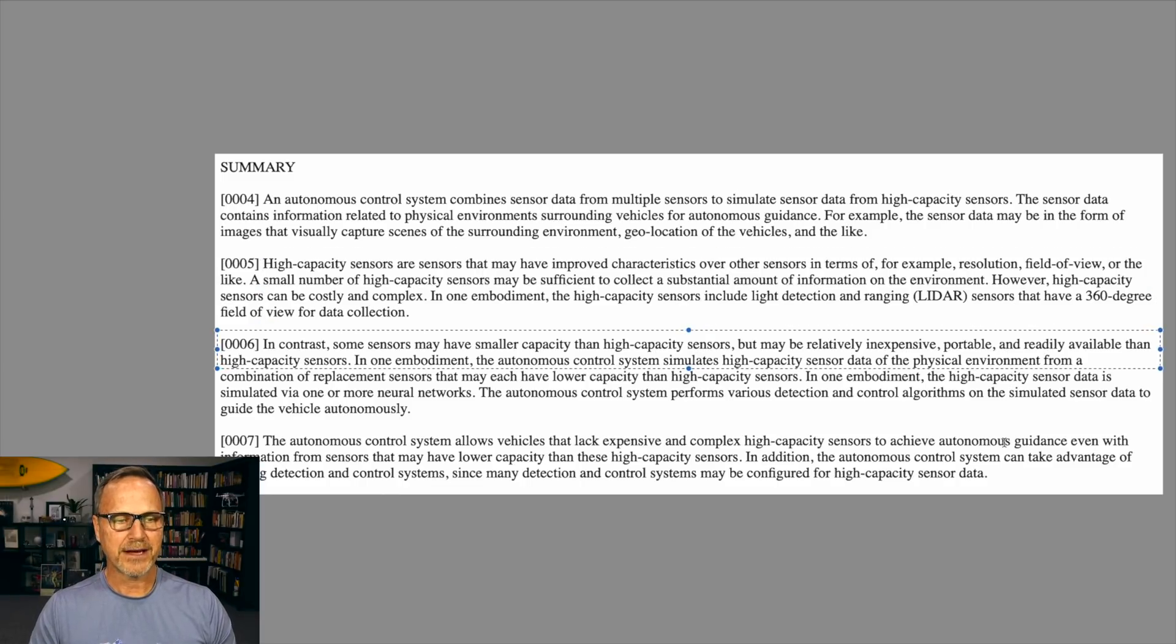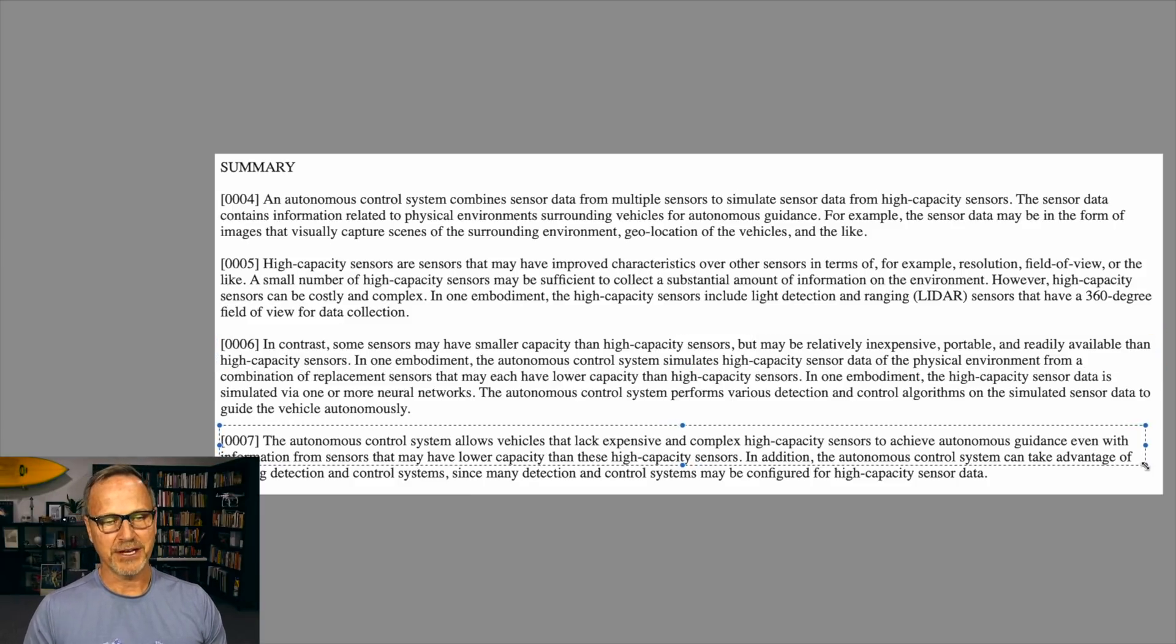Continuing on, in contrast, some sensors have smaller capacity than high-capacity sensors—that would be cameras, by the way—but may be relatively inexpensive, portable, and readily available than high-capacity sensors, which would be the LiDAR systems. In one embodiment, the autonomous control system simulates high-capacity sensor data of the physical environment from a combination of replacement sensors that may each have a lower capacity than the high-capacity sensors. And finally, the autonomous control system allows vehicles that lack expensive and complex high-capacity sensors to achieve autonomous guidance, even with information from sensors that may have lower capacity than these high-capacity sensors.